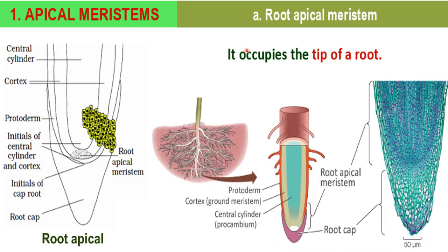Root apical meristem occupies the tip of a root. At the tip of the root, this part is the root cap. And just above the root cap, this part is the root apical meristem. In the center, the central most part is the central cylinder, also called procambium. Just outside the central cylinder is the cortex, which is also called ground meristem.